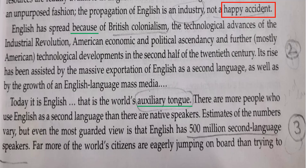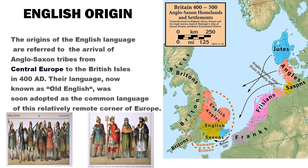Now we are going into the origin of English. The question arises: where did this English come from? History tells us there were tribal people — Angles and Saxons — who moved from Central Europe to Britain and settled as colonies. Their language is called Old English. If you combine the two words — Angles and Saxons — it gradually becomes English. That is how English has originated. So this is about the third paragraph and the origin of English.